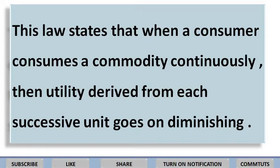जैसे जब मैंने एक chocolate खाई तो satisfaction ज़्यादा था। Second chocolate खाऊंगी तो satisfaction level थोड़ा कम होगा first के comparison में। Third chocolate खाऊंगी तो satisfaction और भी कम होगा। इसी तरह जितनी ज़्यादा chocolates खाऊंगी, हर chocolate से मिलने वाला satisfaction कम होता जाएगा। एक time ऐसा आएगा कि chocolate खाने की इच्छा बिल्कुल खत्म हो जाएगी और utility zero हो जाएगी — यानि totally satisfied। इसके बाद भी कोई chocolate खिला दे तो utility negative में पहुंच जाएगी।